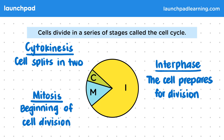After cytokinesis, the cell cycle begins again in the new cells. For the exam, you should be able to describe the three overall stages of the cell cycle, including mitosis.